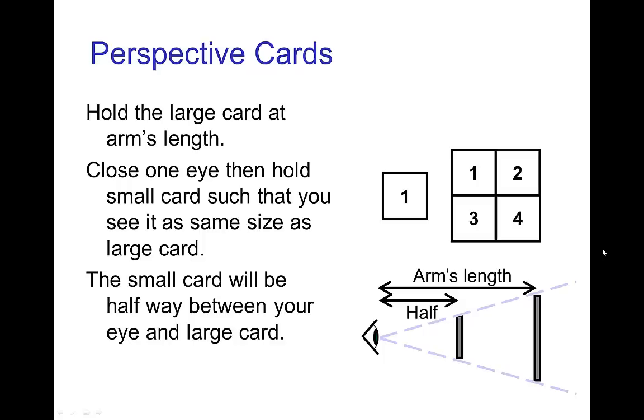You can see this for yourself if you make a pair of cards, one of them is four times the size of the other one. Take the large one, hold it at arm's length, and then take the smaller one and move it in front of your face until it appears to be the same size as the large card. Close one eye so that you can get a good focus, and what you'll discover is that when the two of them are the same apparent size, the small one is half the distance that the large one is even though it's one quarter of the size.